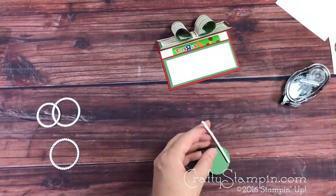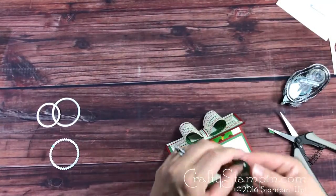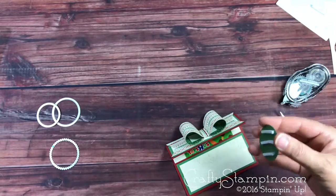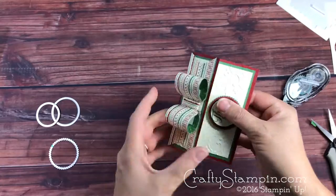We're going to use the foam adhesive strips because they're a little thicker than dimensionals and you need that extra space for the closure. When you attach this to the card base, make sure it overlaps the top flap by about an eighth of an inch to keep it closed.